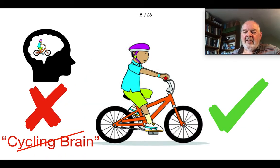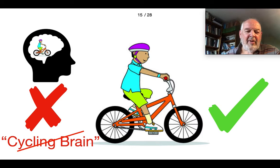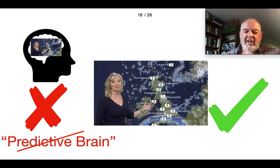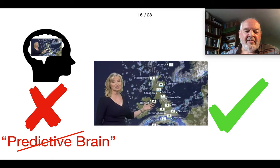Unfortunately, many people get the parts and the whole confused. This is called the mereological fallacy, or simply a category error. Too many people think that because I know how to ride a bicycle, my brain — or maybe part of my brain — knows how to ride a bicycle. Too many people think that because I understand when somebody predicts it's going to rain tomorrow, my brain or some part of my brain understands what it means to make a prediction. This mereological fallacy motivates predictive brain and predictive processing ideas.